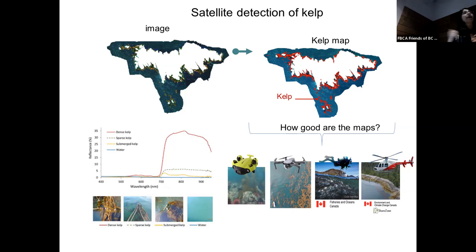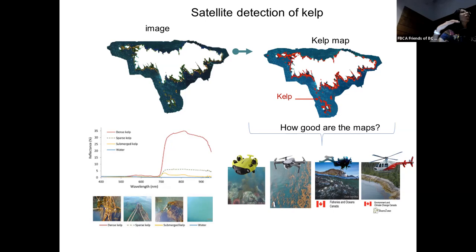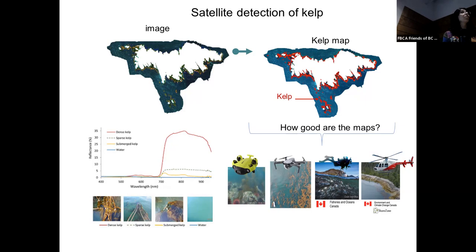How good are those maps? The same way we validated the nautical charts, we validate the satellite images — making sure what we classify is actually kelp. We look at underwater drone robot videos, above-water drone imagery, diving data from DFO, helicopter data from Environment and Climate Change Canada, and we work with First Nations, coastal communities, and sea kayak clubs. Everybody who may have field data helps us validate how well our classifications are — and they're pretty good, actually. These satellites are about 700 kilometers above Earth's surface and they can see kelp quite well.